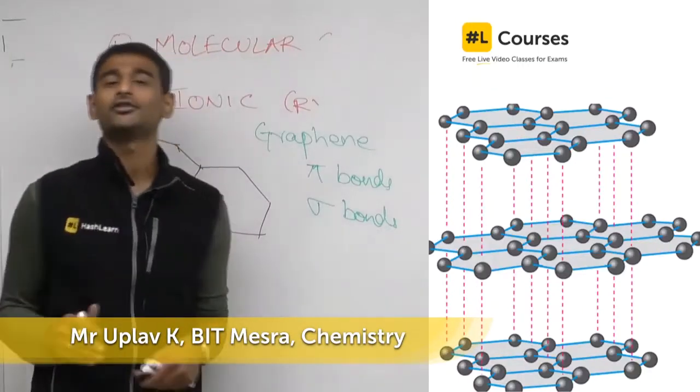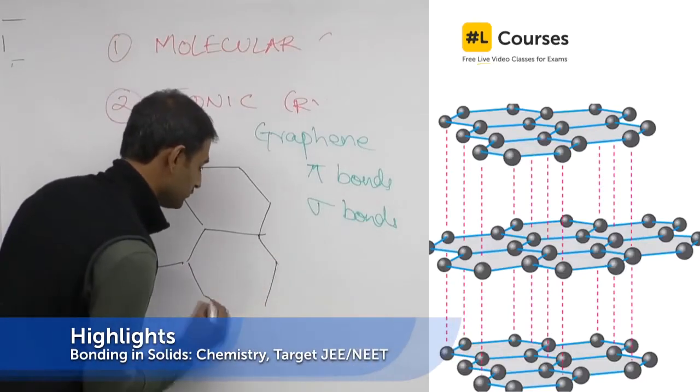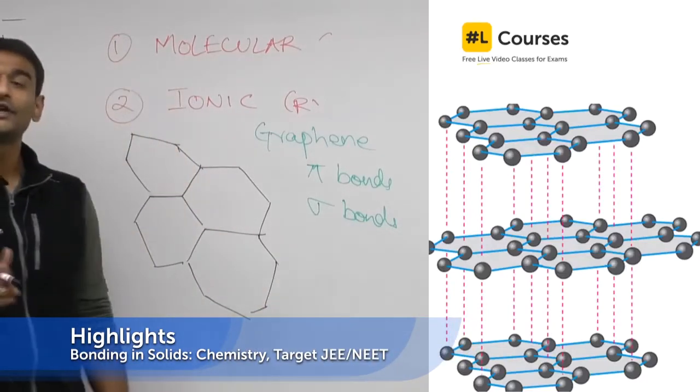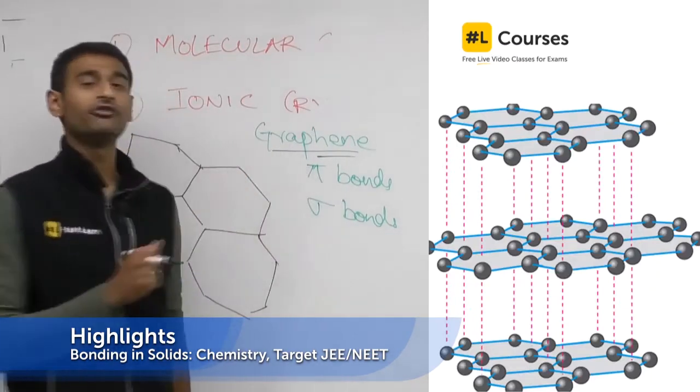I asked you what is the hardest known substance that is known to man. The answer to that is graphene. So one layer of graphite, also known as graphene, is the hardest known substance that is known to man on earth.